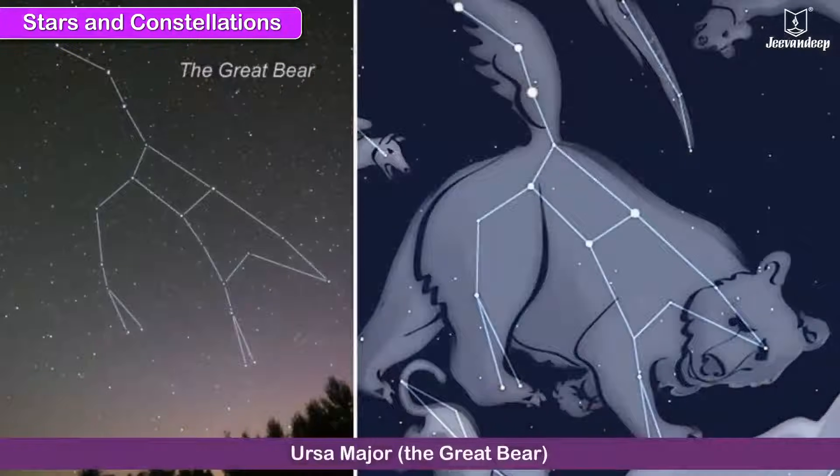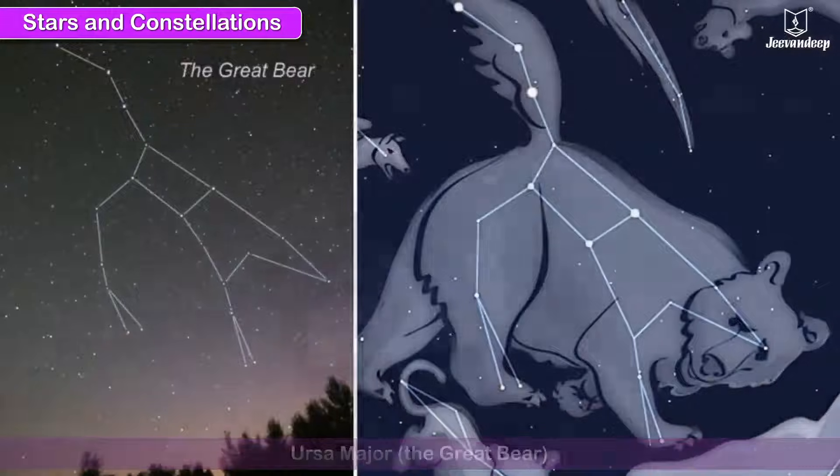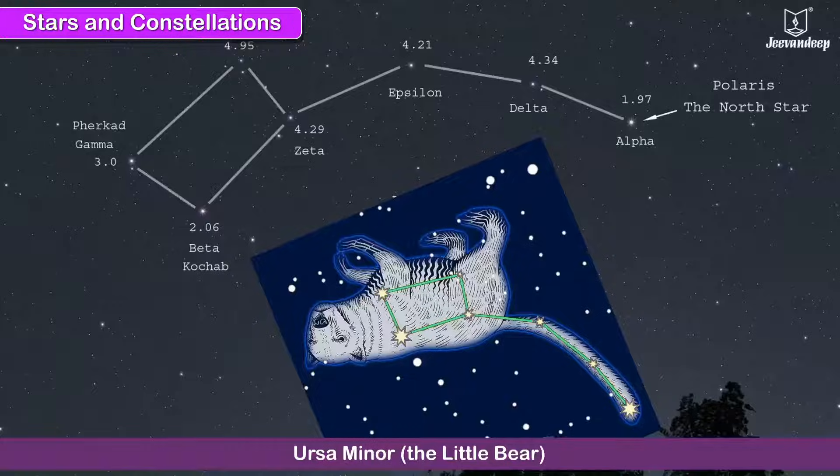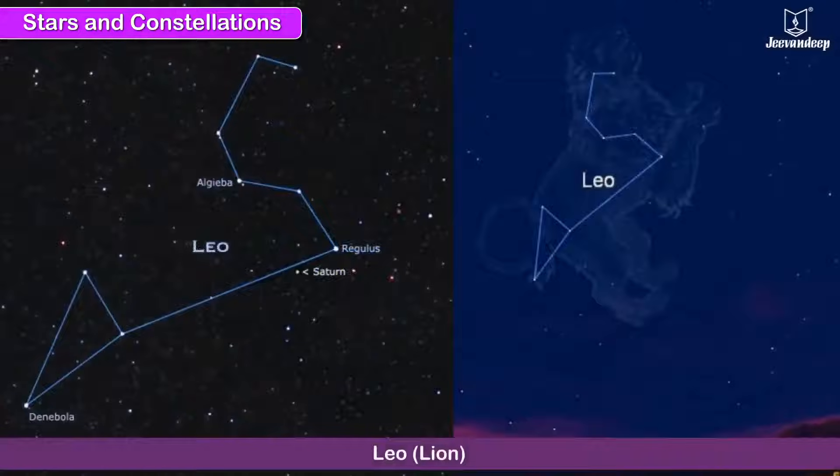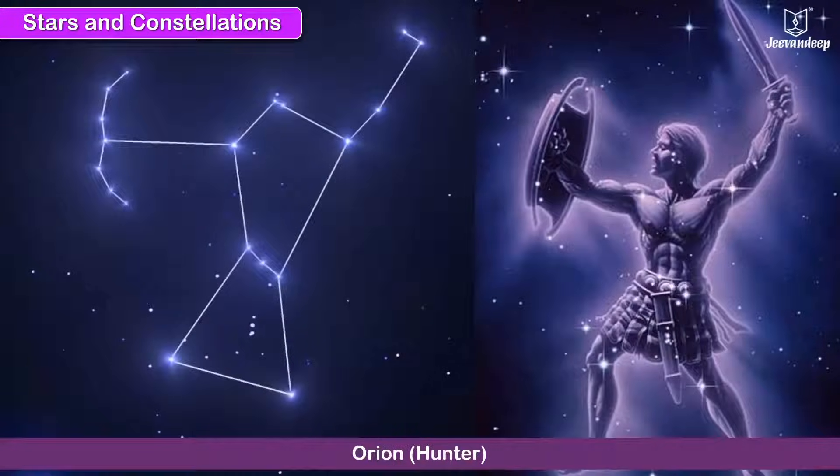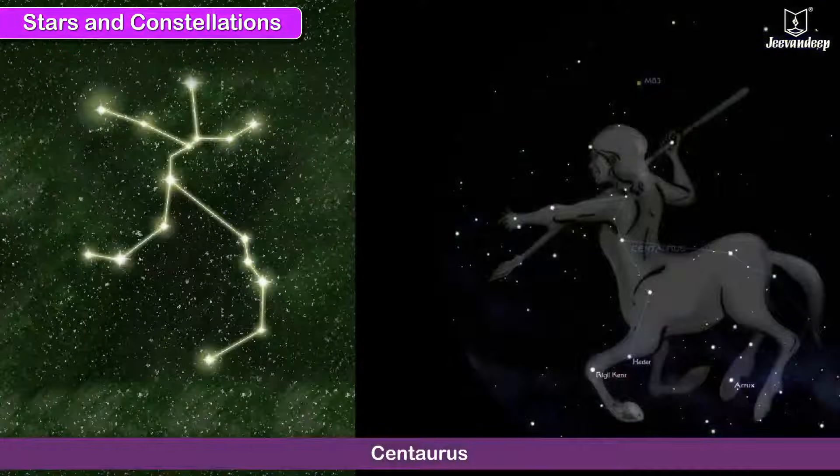Ursa Major, the Great Bear; Ursa Minor, the Little Bear; Leo, lion; Orion, hunter; and Centaurus are some of them.